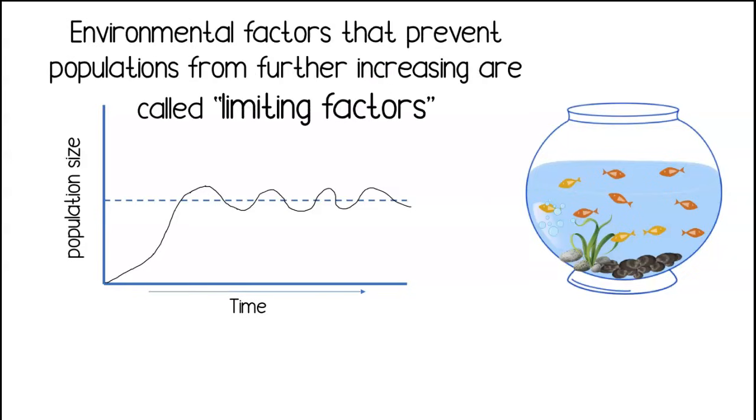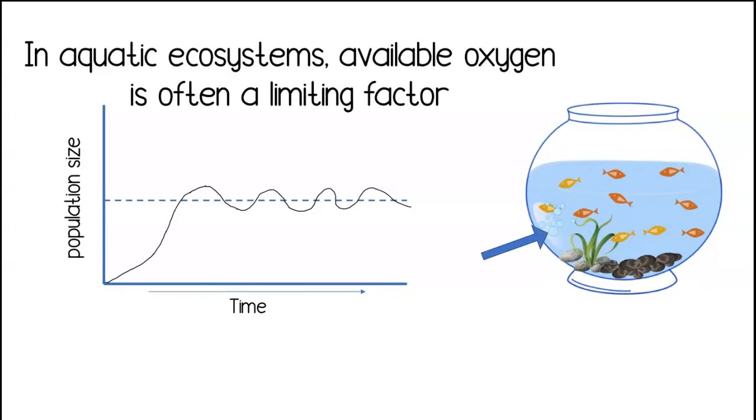Environmental factors that prevent populations from further increasing are called limiting factors. In aquatic ecosystems, available oxygen is often a limiting factor.